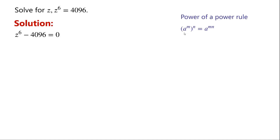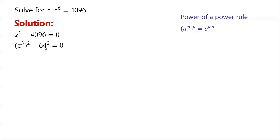Power of a power rule: a to the power of m equals a to the power of mn. By applying this rule, z to the power of 6 can be written as (z cubed) squared. 4,096 can be written as 64 squared.